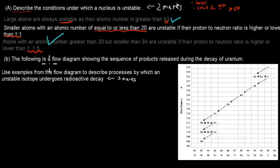So the second part was the following is a flow diagram showing the sequence of products released during the decay of uranium. Use examples from the flow diagram to describe processes by which an unstable isotope undergoes radioactive decay. So there's two parts to this.